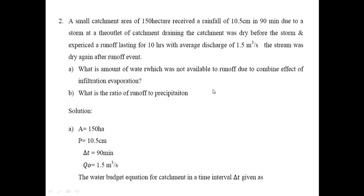Example 2: A small catchment area of 150 hectares received a rainfall of 10.5 cm in 90 minutes due to a storm. At the outlet of the catchment draining the catchment, the stream was dry before the storm and experienced a runoff lasting 10 hours with an average discharge of 1.5 cubic meters per second. The stream was dry again after the runoff. Part A: What is the amount of water not available for runoff due to the combined effect of infiltration and evaporation?